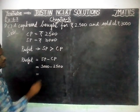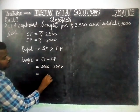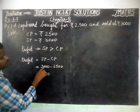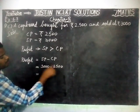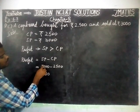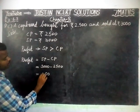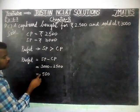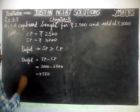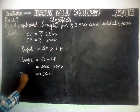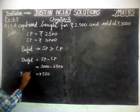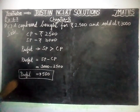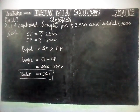Here, 0 minus 0 equals 0. Next, 0 minus 5 is not possible, so we borrow. This becomes 10; 10 minus 5 equals 5. Then 2 minus 2 equals 0. So, profit amount is equal to Rs. 500.